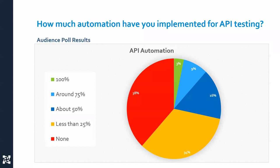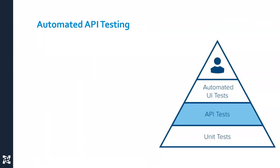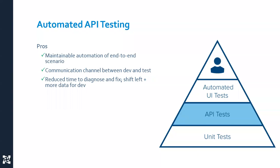Looking at the survey results, a very small percentage have achieved 100% API automation, and a large number have not created any API test automation at all. This is because it typically requires a level of technical expertise and time investment. When working with customers every day, there's always a challenge around understanding what APIs need to be tested and how to go about doing that, which is what we'll address today.